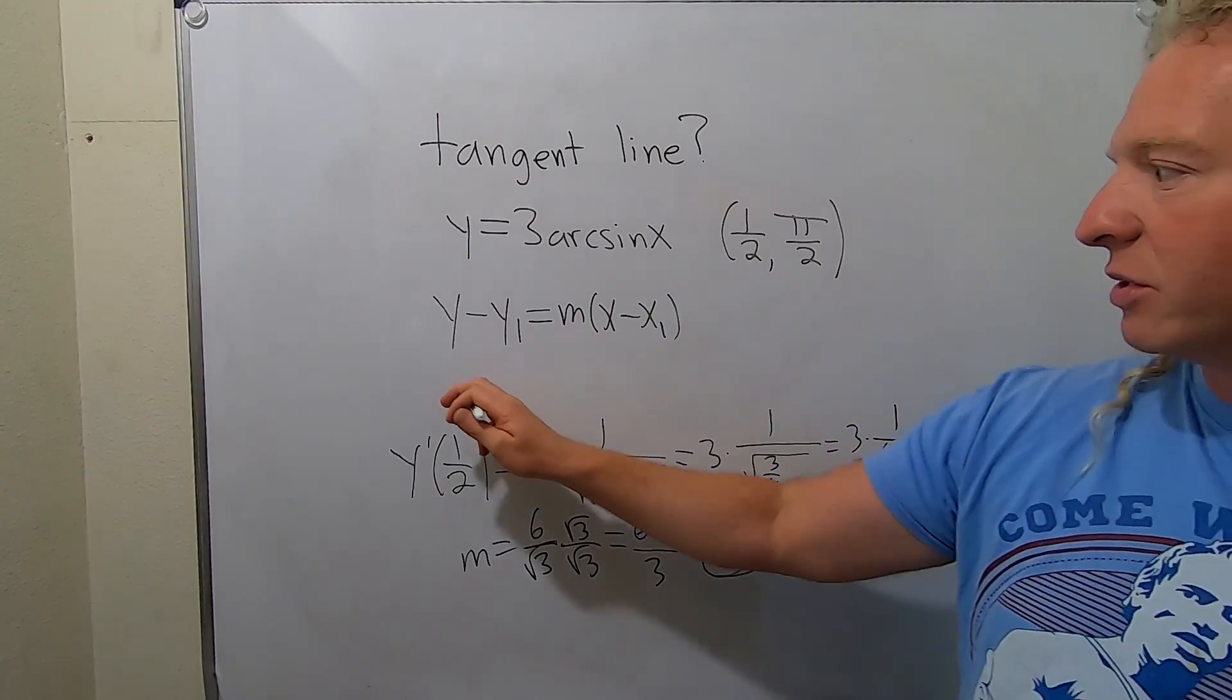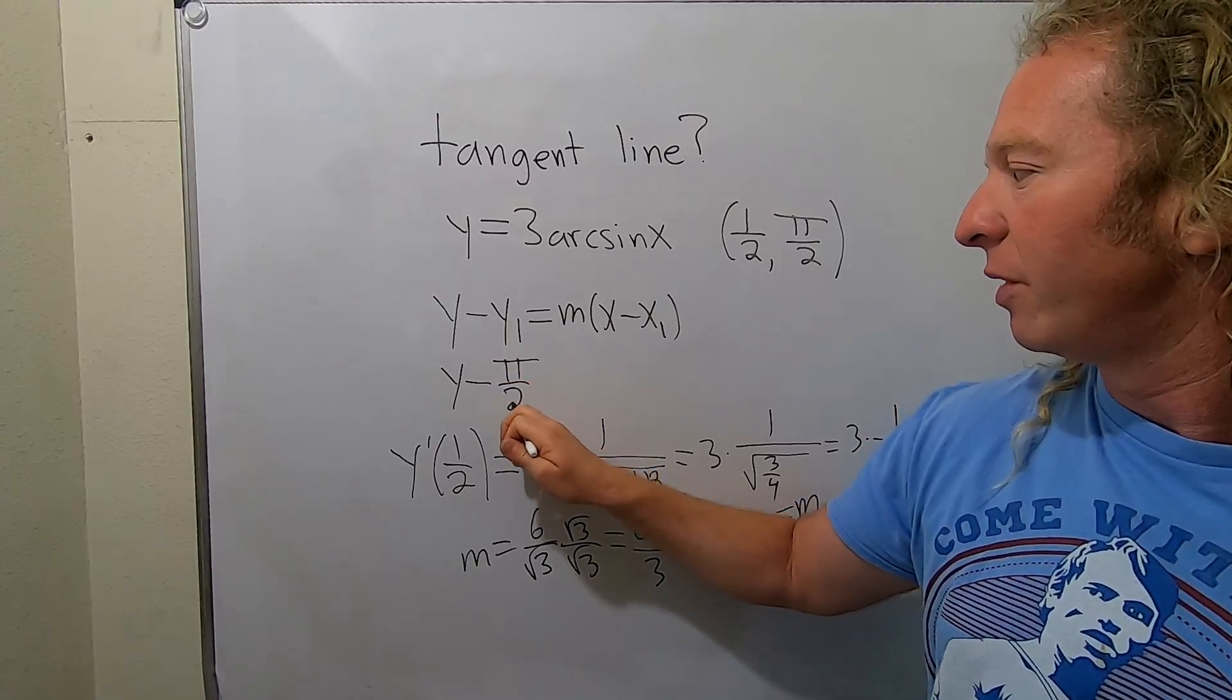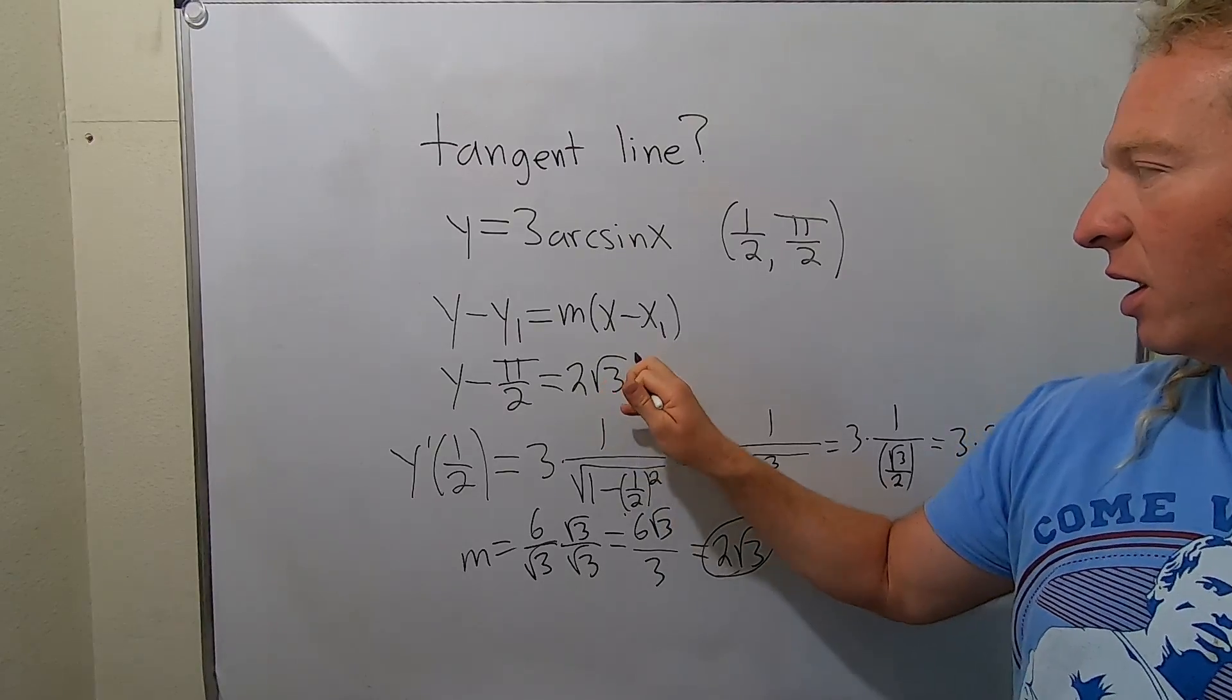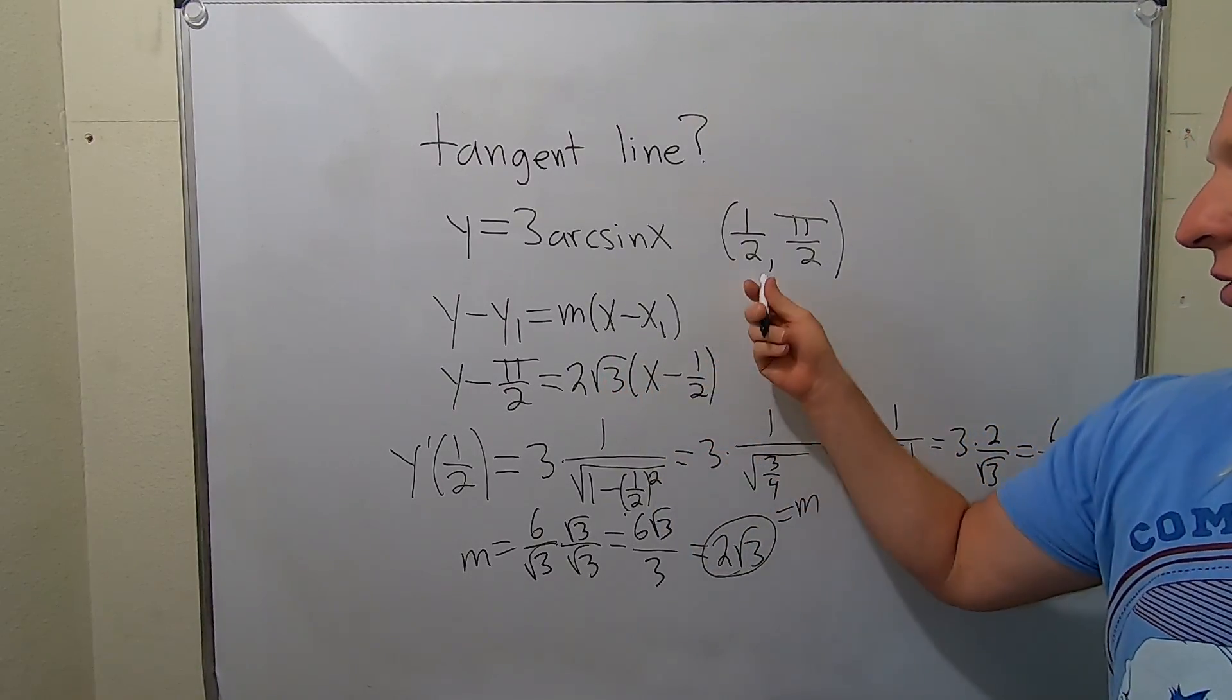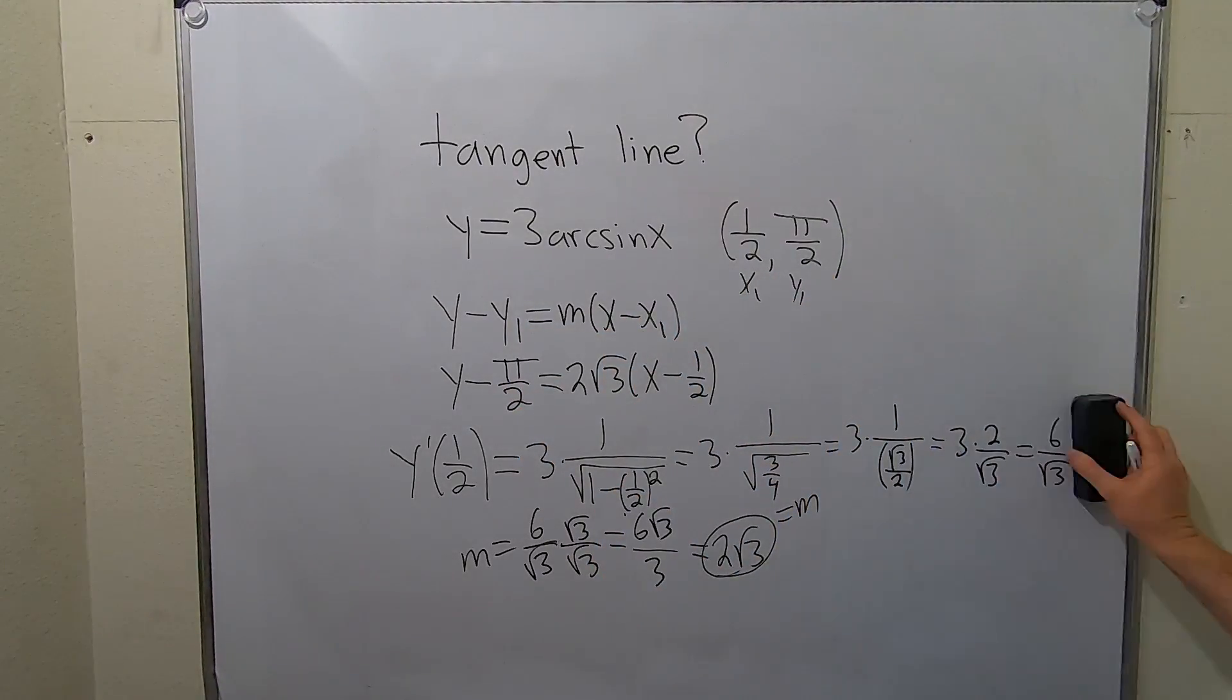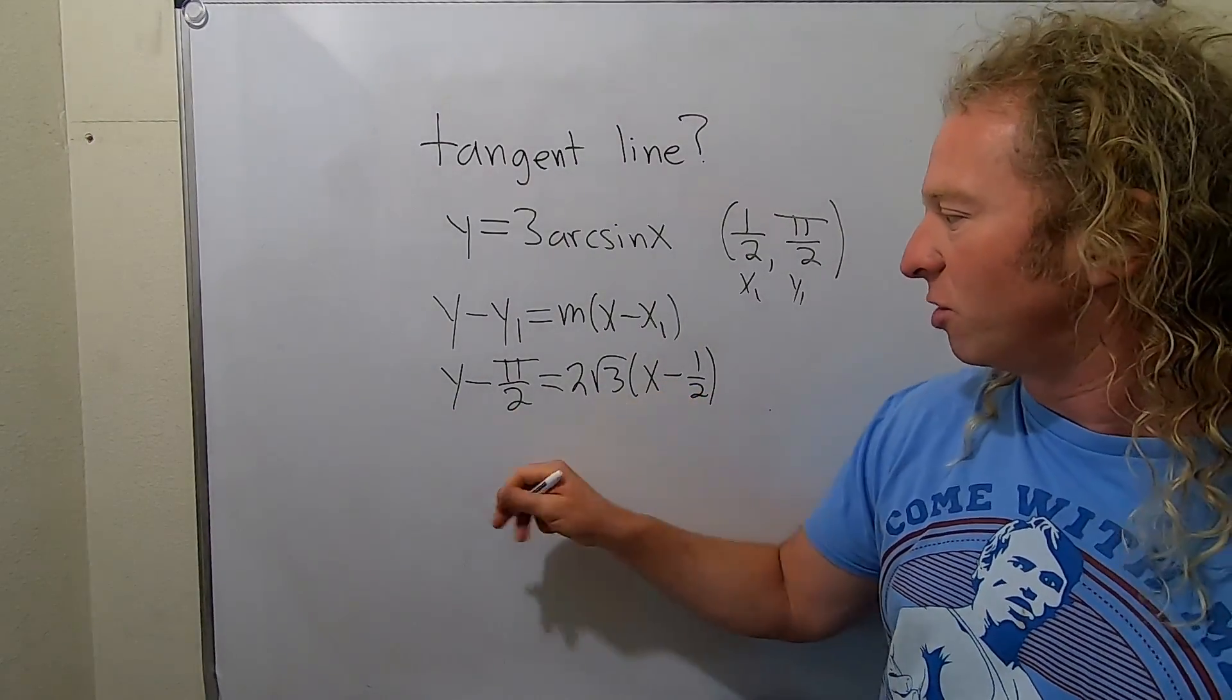So let's see. This is y minus y1 is π over 2. So π over 2. M is this, so 2 square root of 3. Then we have x minus 1 half. So this is our x1, this is our y1. I'm just plugging them in to the formula. I'm going to go ahead and erase this. And let's keep going here. So I guess now we have to distribute this.